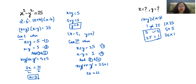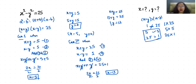Dividing both sides by 2, x equals 13. Now substituting into equation 3: x plus y equals 25, so 13 plus y equals 25, giving y equals 12. So in case two, x equals 13 and y equals 12.